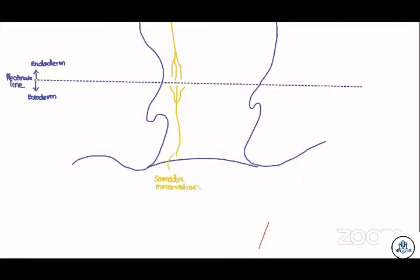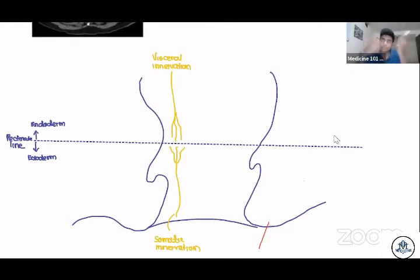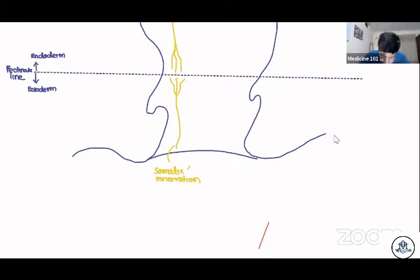The region below the pectinate line will have somatic innervation. Somatic means body wall — it innervates the skeletal muscles, the wall of the body. Visceral means inside. So visceral innervation is above, somatic innervation is below the pectinate line.